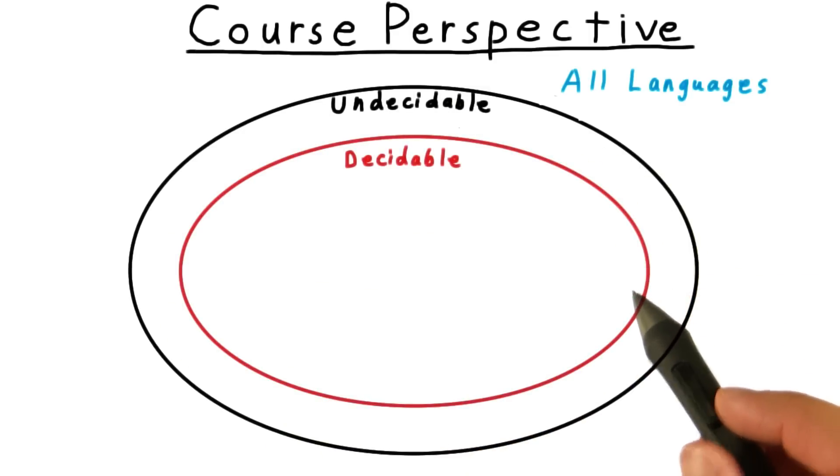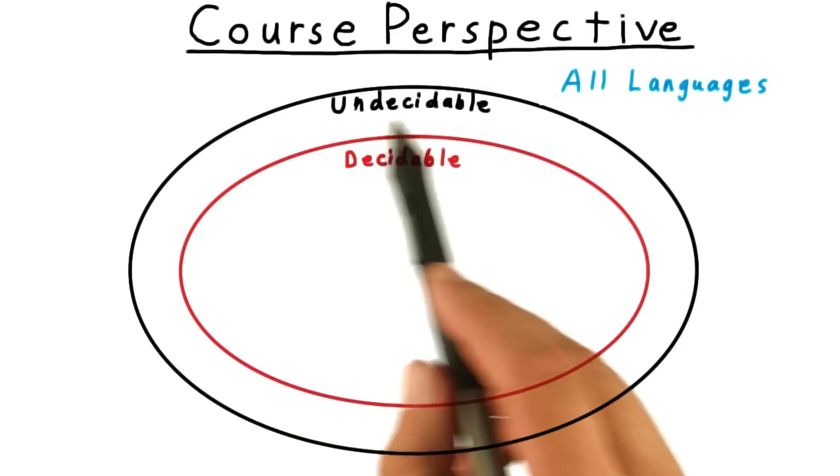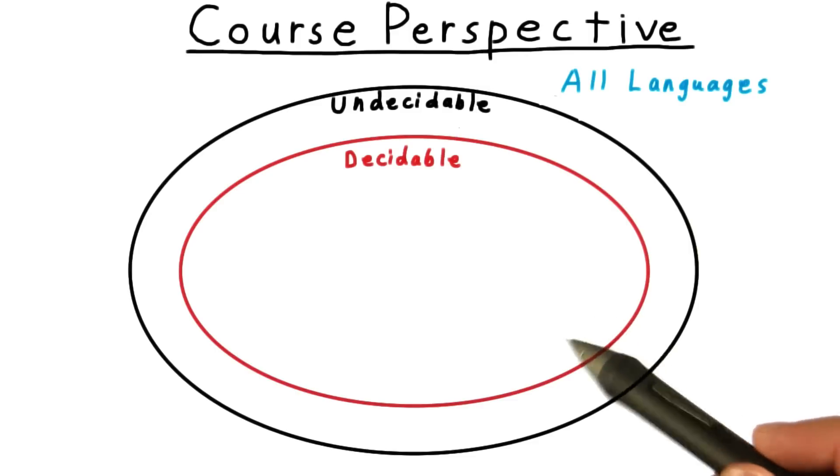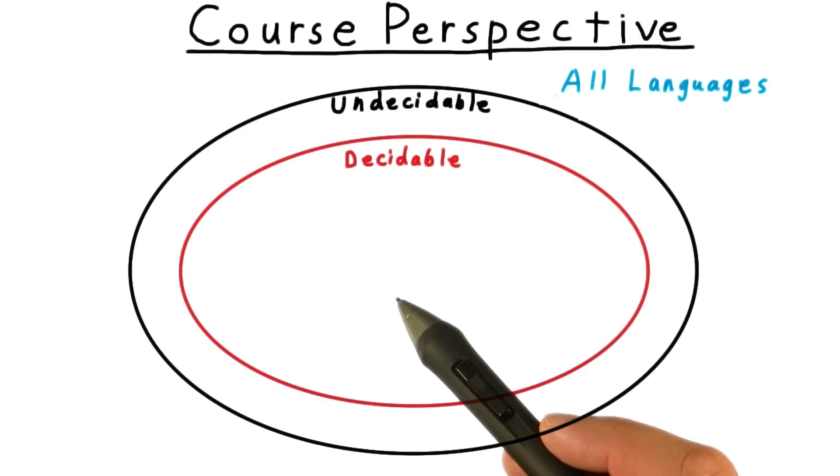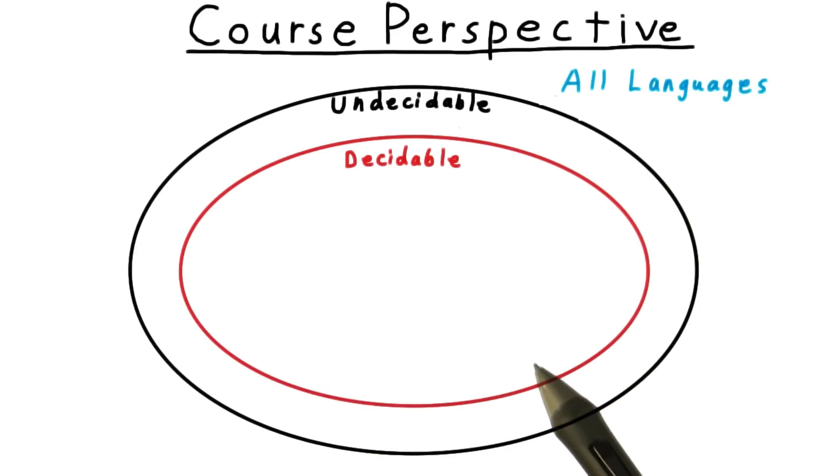Then we began to distinguish between decidable languages and undecidable ones. Remember that there were uncountably many undecidable ones, but only countably many decidable ones. In comparison then, the decidable ones should be infinitesimally small. But I'll give them this big circle here anyway, because they're so interesting to us.